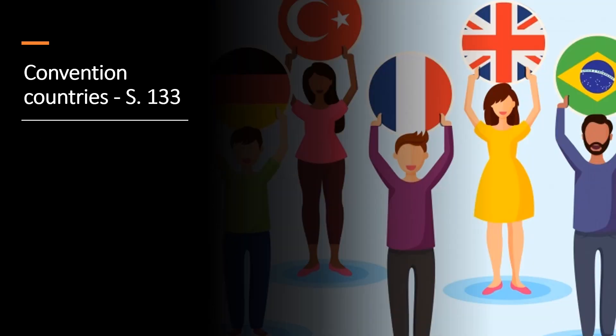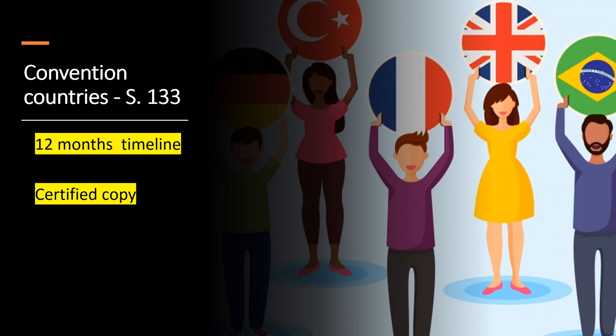There are two very important things you must remember with respect to convention application and convention countries. Number one: a national from a convention country can file a patent application in another convention country within a 12-month timeline and claim priority from its first application. The second important thing is that in order to get convention status, the applicant must submit a certified copy — also called a priority document — of the application filed in the convention country.